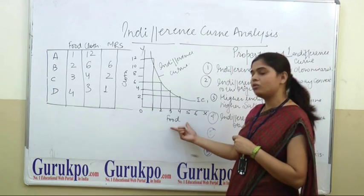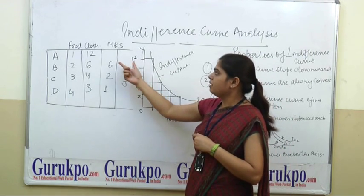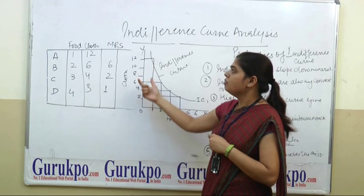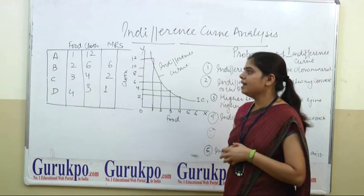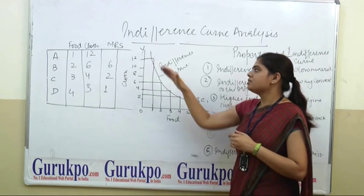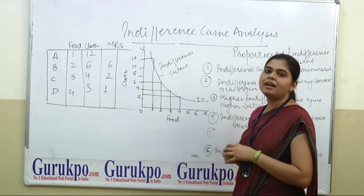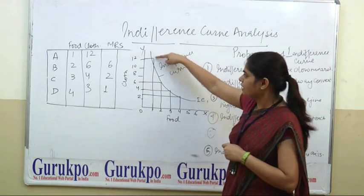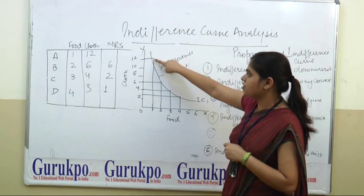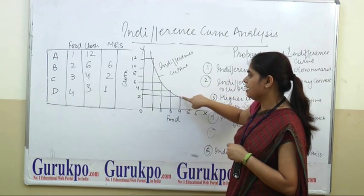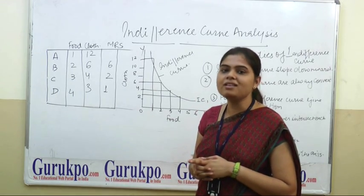On the X-axis we take the quantity of food, and on the Y-axis we take the quantity of cloth. When the quantity of cloth is 12, the food quantity is 1. When the quantity of cloth is 6, the food quantity is 2. And when 4 and 3, and 3 and 4 — when we add these points and prepare the curve, that is known as an indifference curve. This curve shows all combinations A, B, C, and D, and all points give equal satisfaction to the consumer. It is known as an indifference curve.